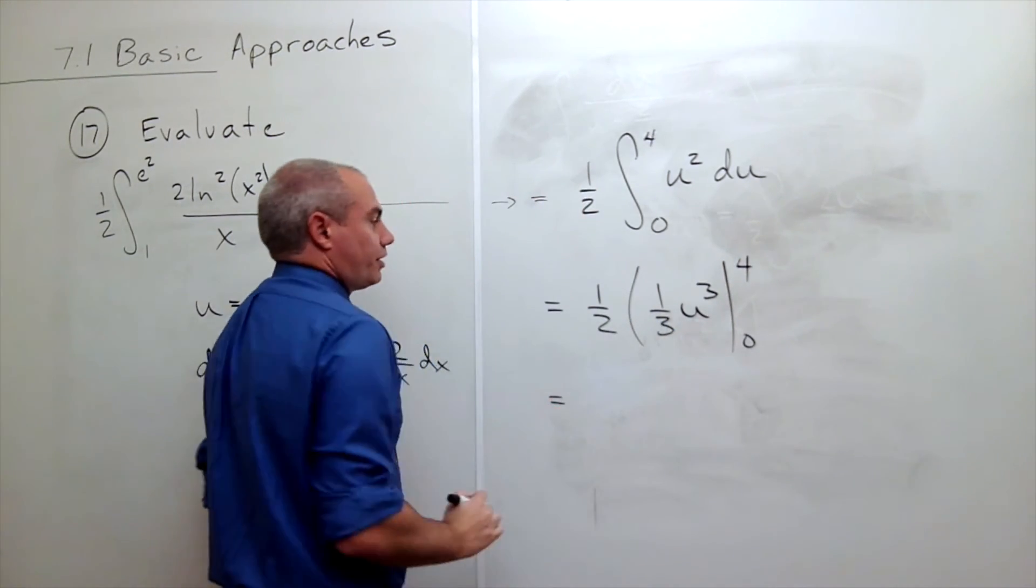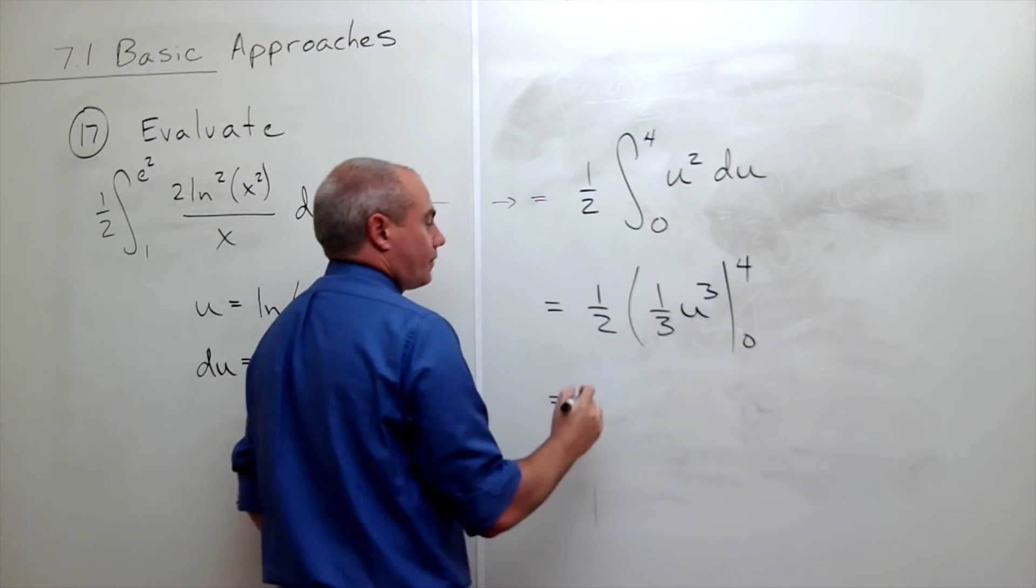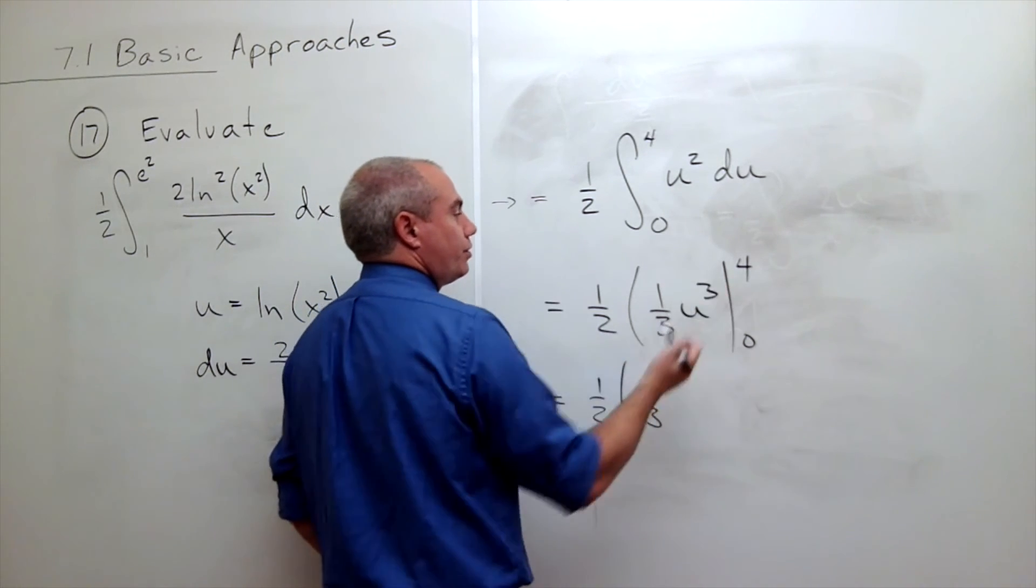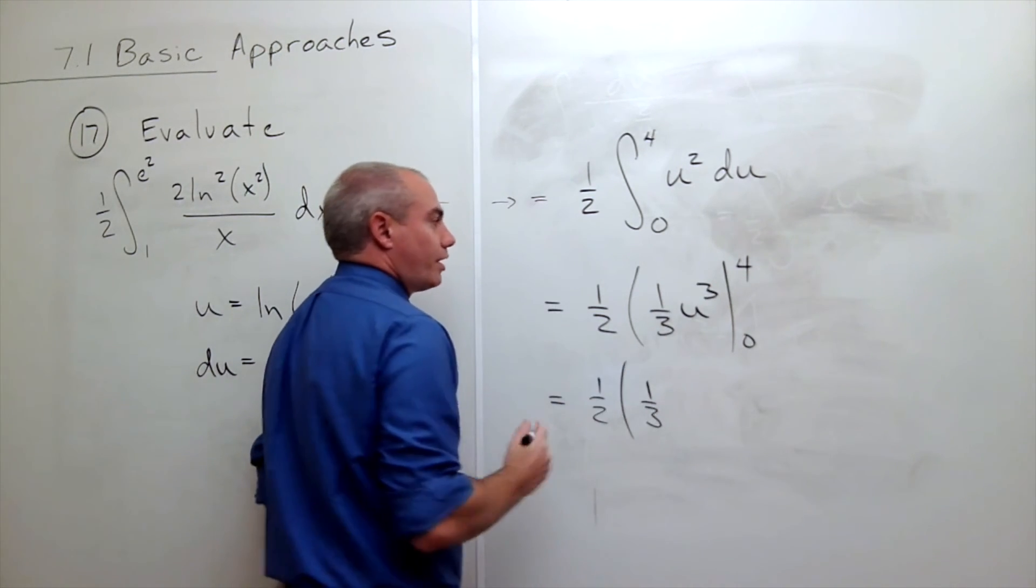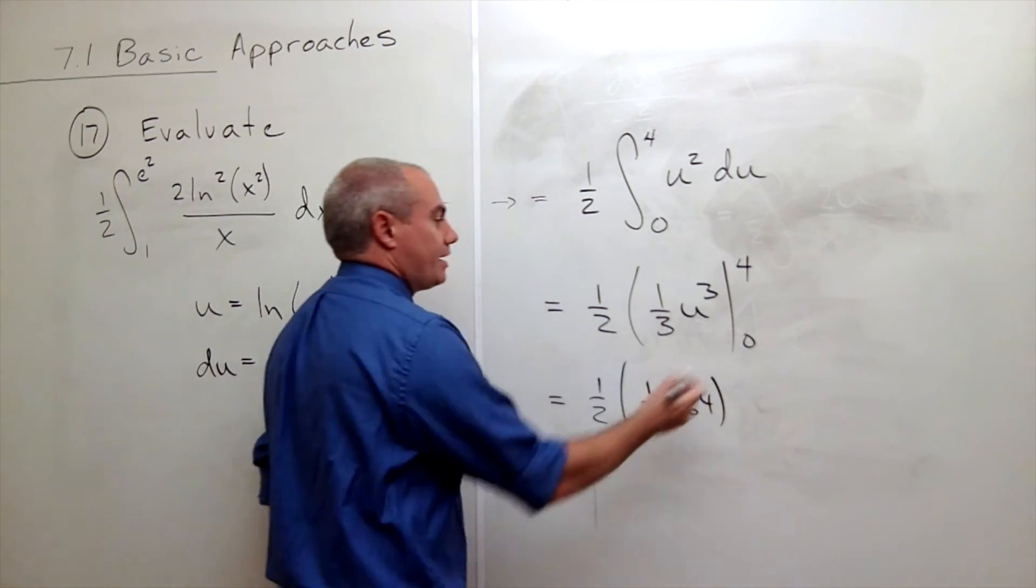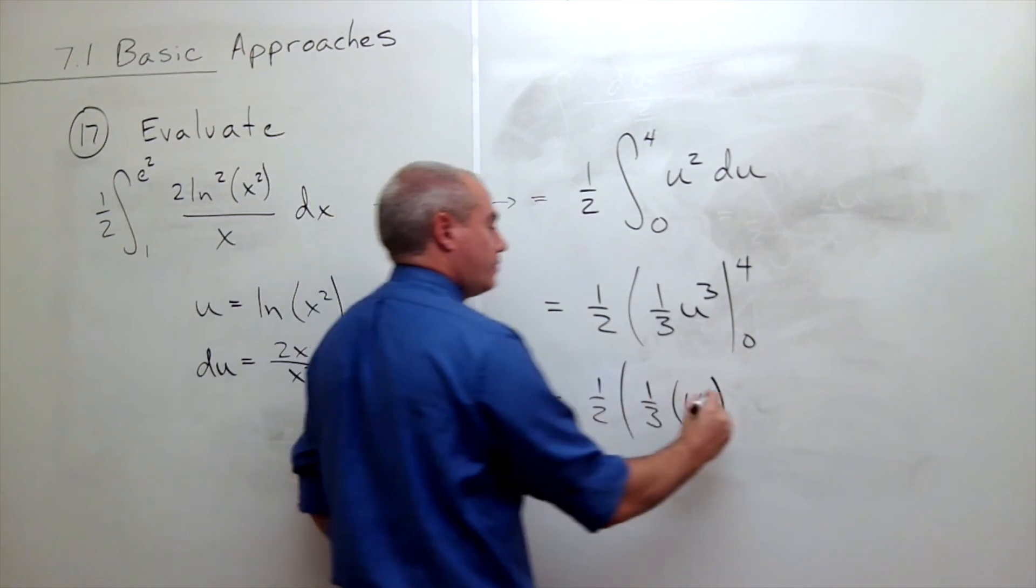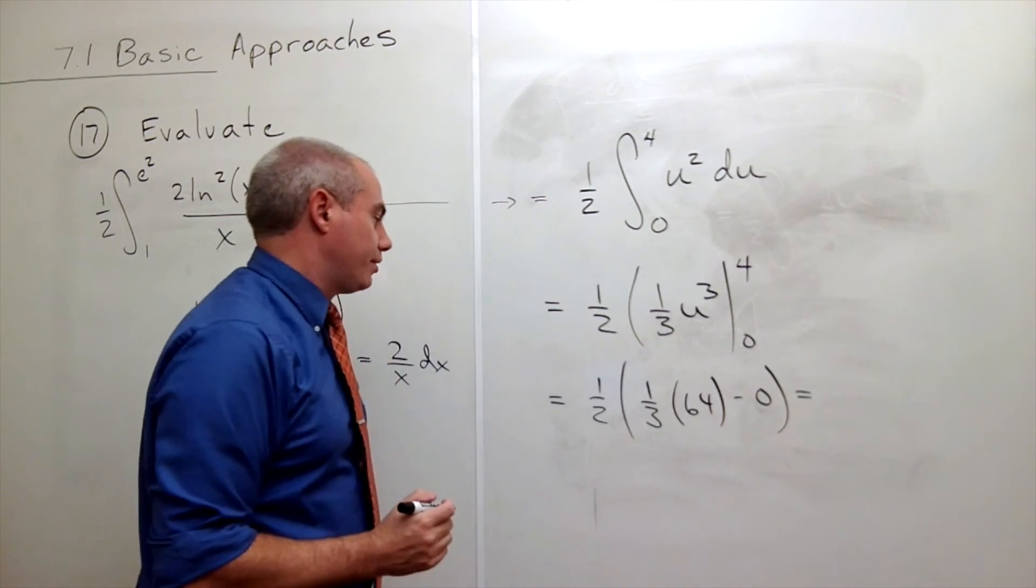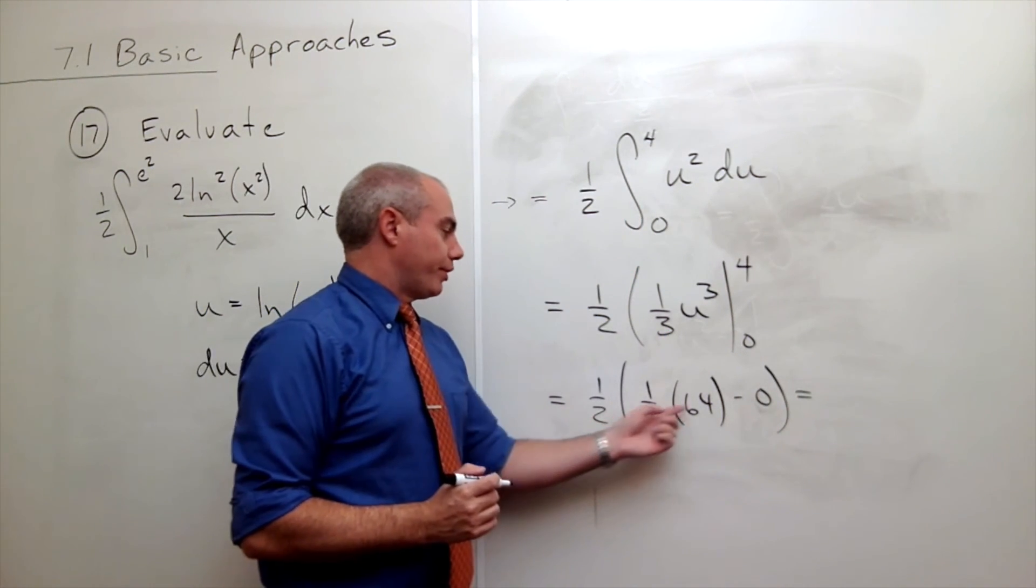Let's plug in the 4. I get 1 half times 1 third. u cubed, when I plug in 4, is 64. Minus plugging in 0 is 0.